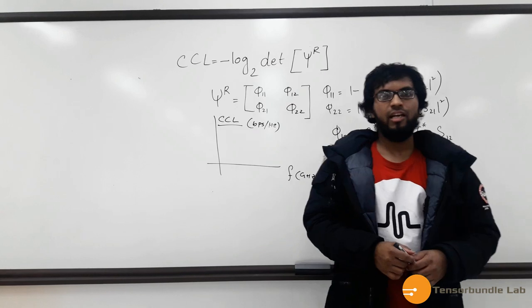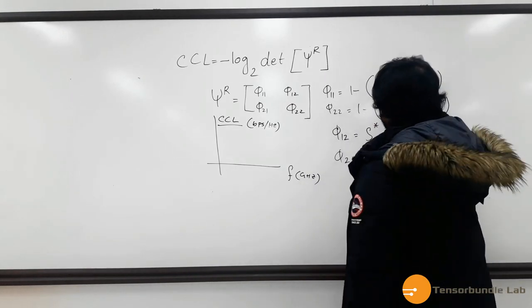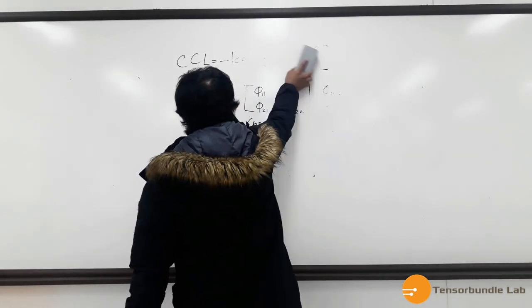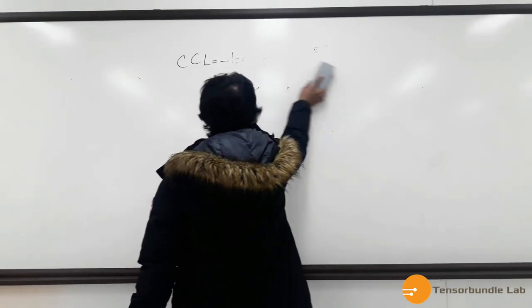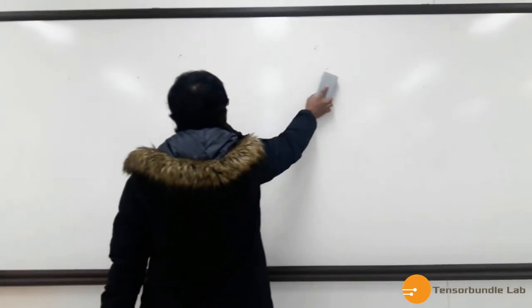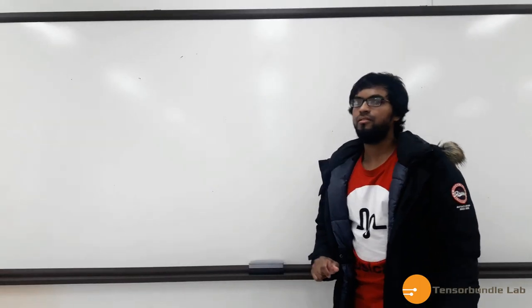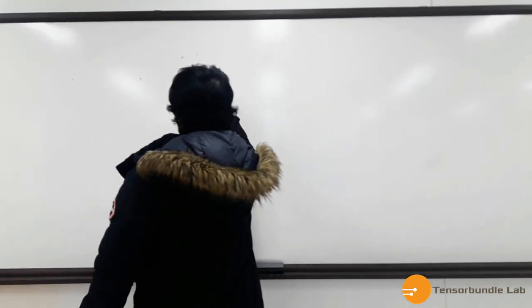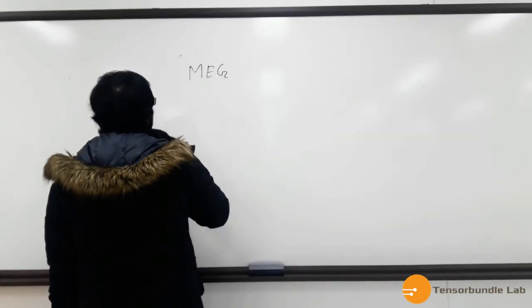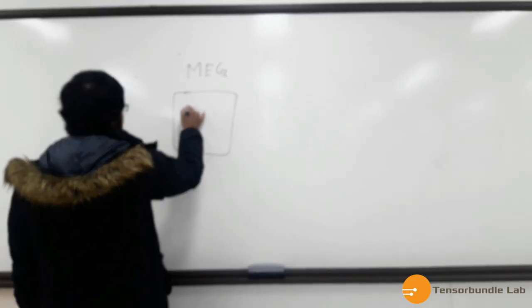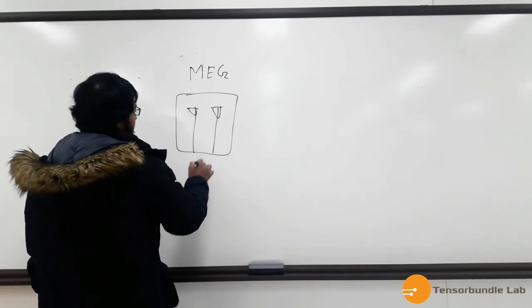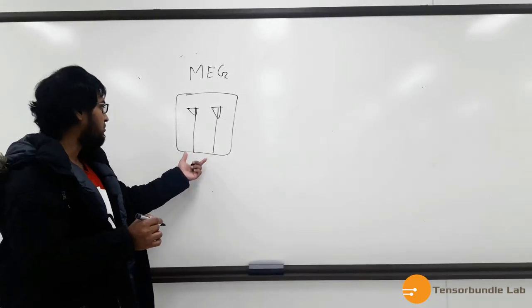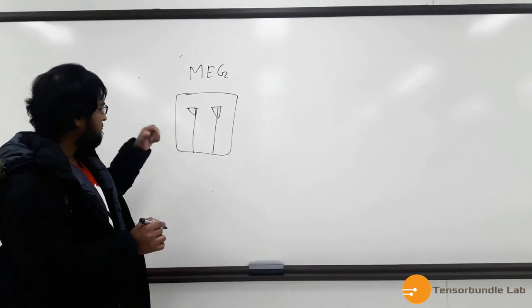Now our next topic is MEG. So MEG can be defined as basically for 2-port MIMO antenna system. We have two ports, right? In MIMO antenna system, it will have multiple ports. So MEG is defined for each port.